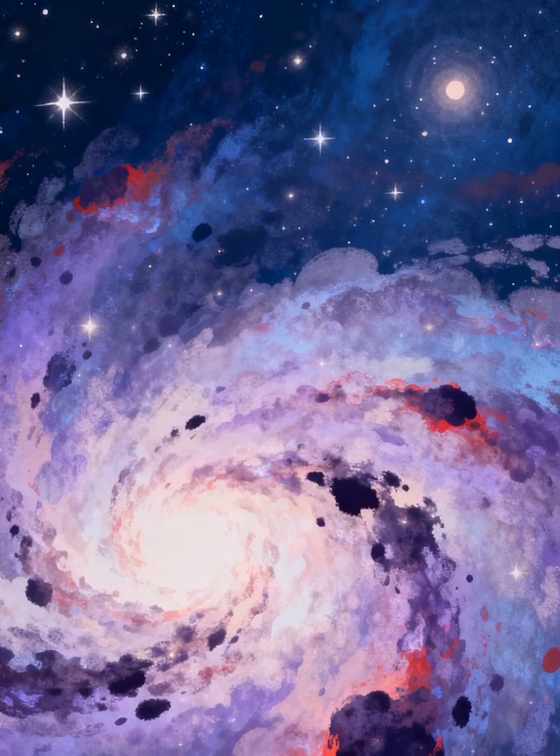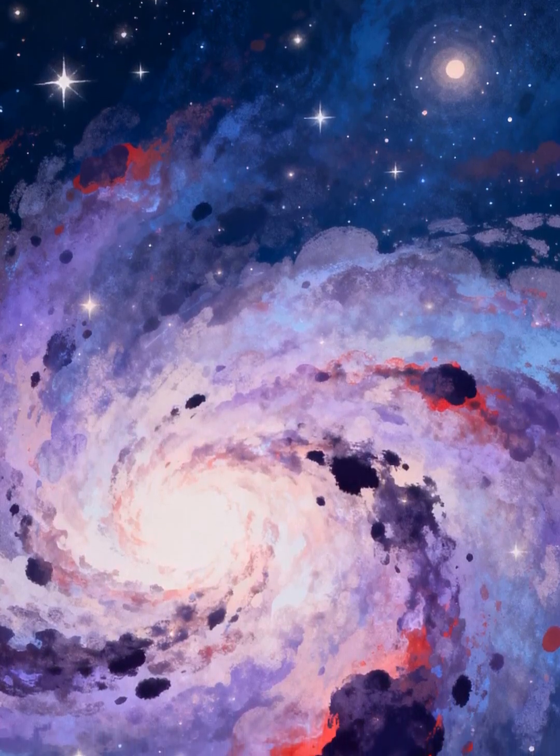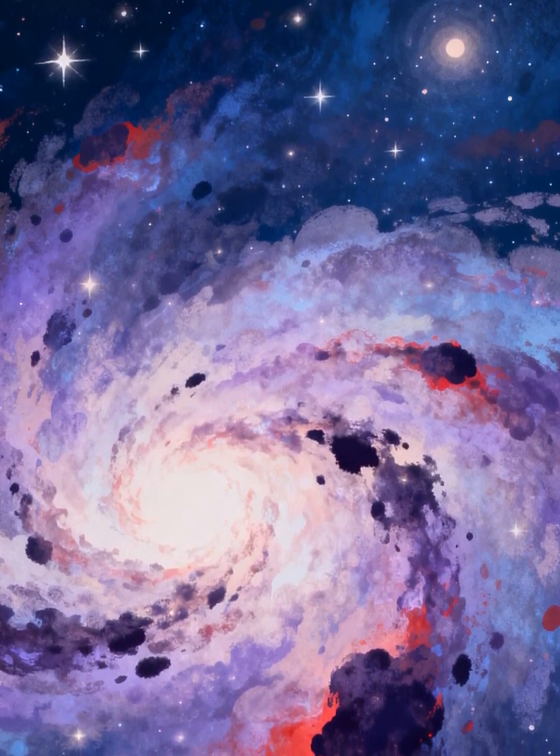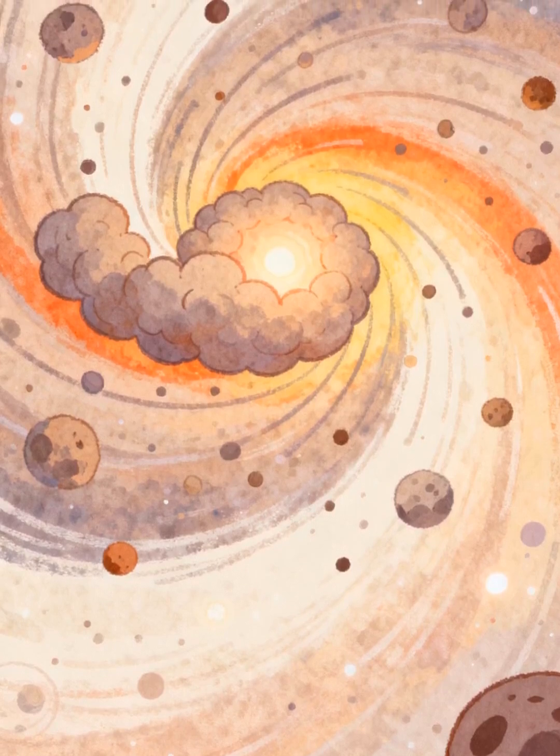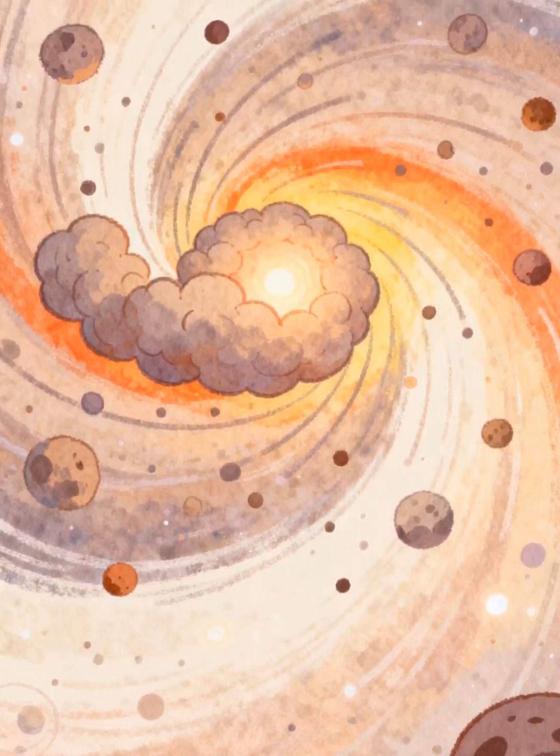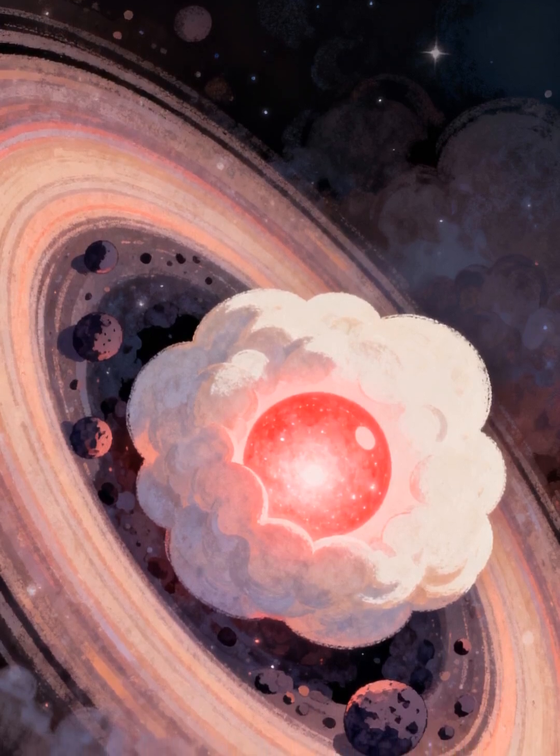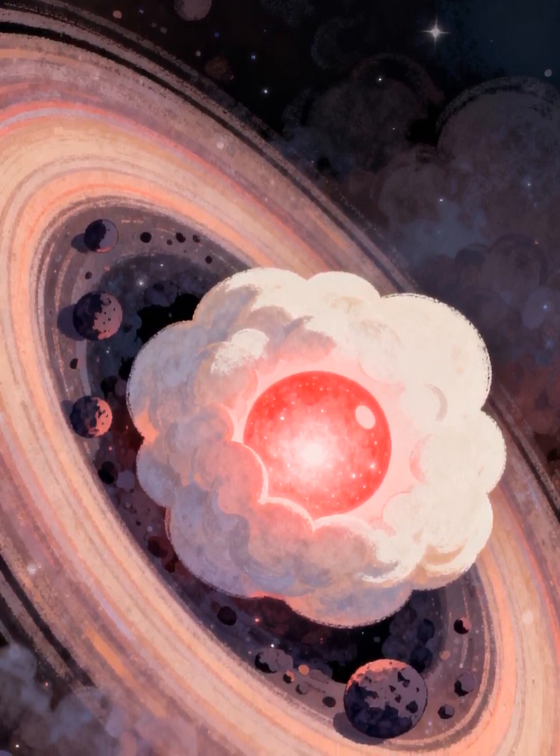In the vast expanse of space, stars are born from clouds of gas and dust. These clouds collapse under gravity, spinning faster and faster. As the cloud compresses, it heats up, forming a protostar.